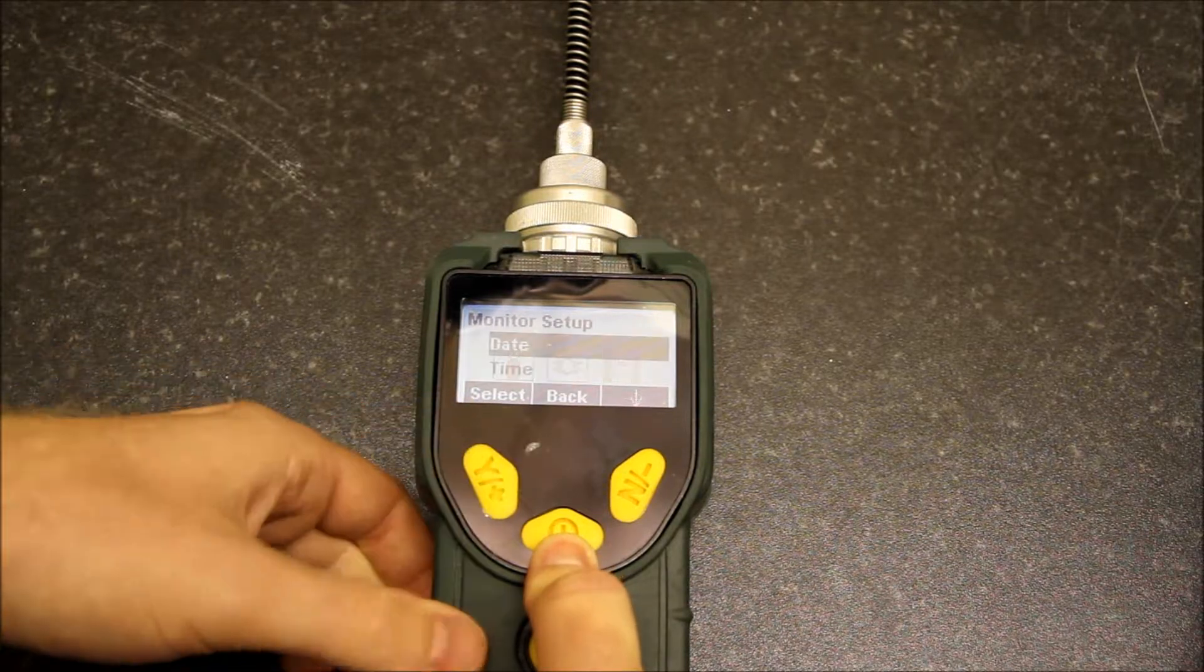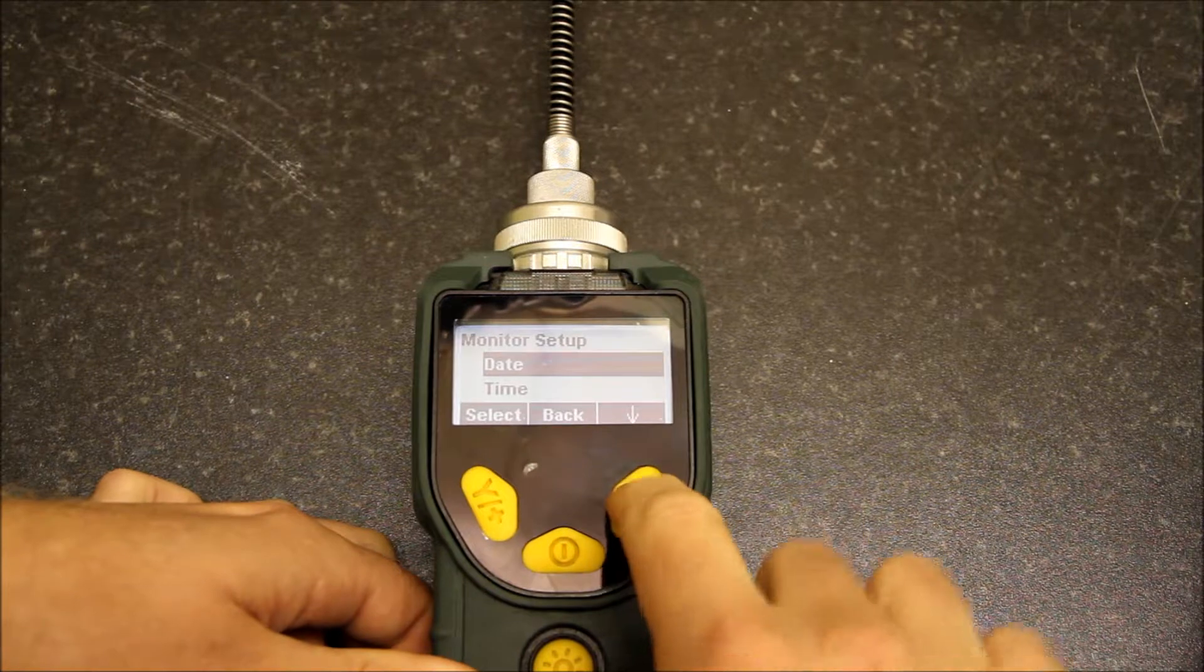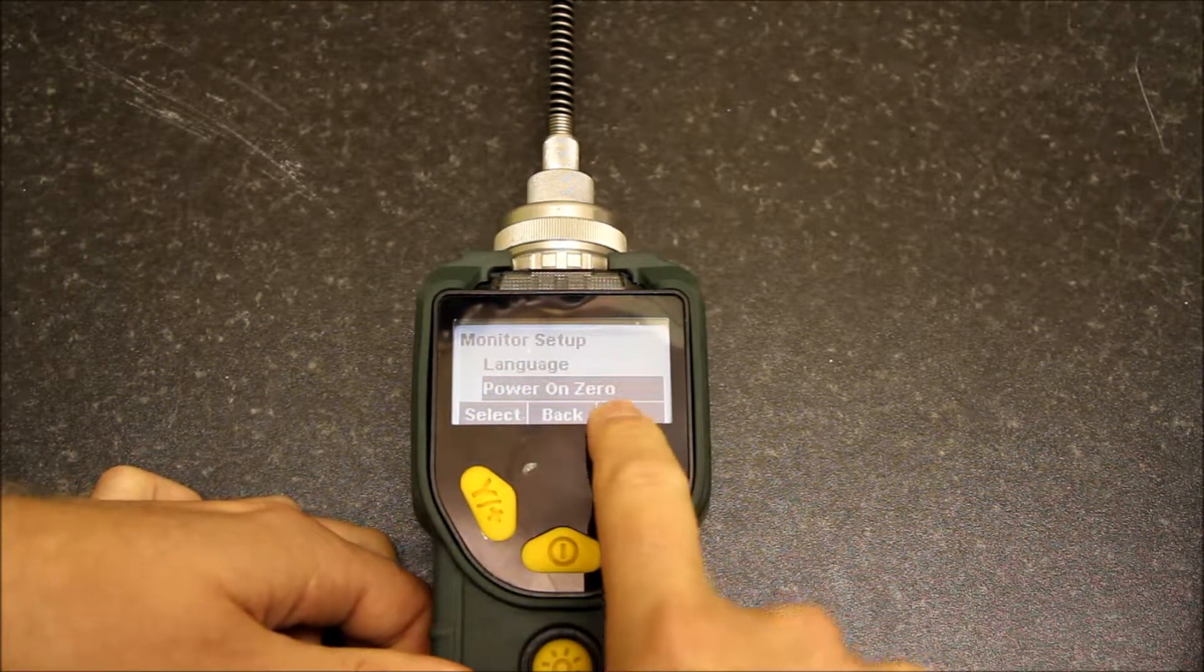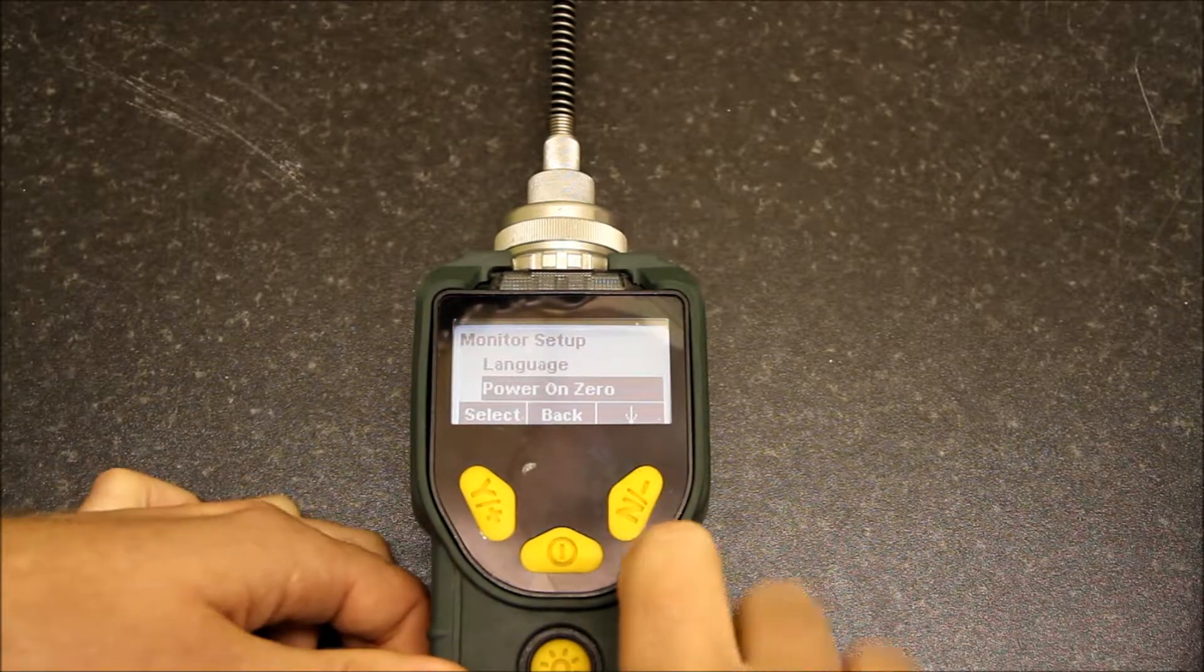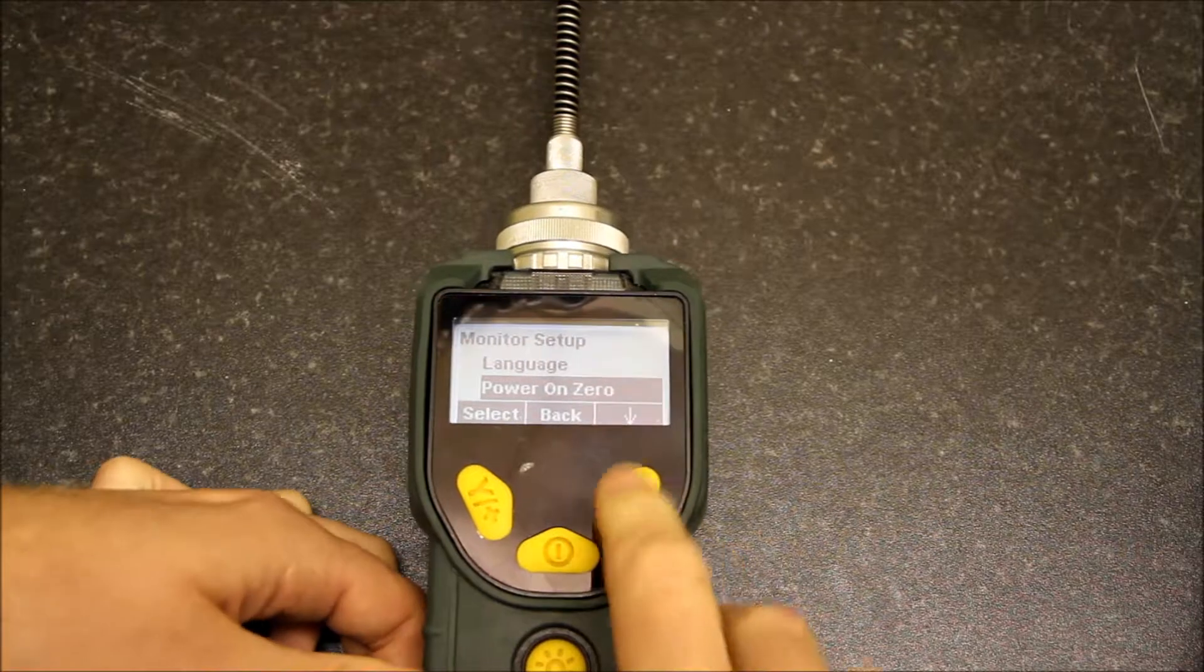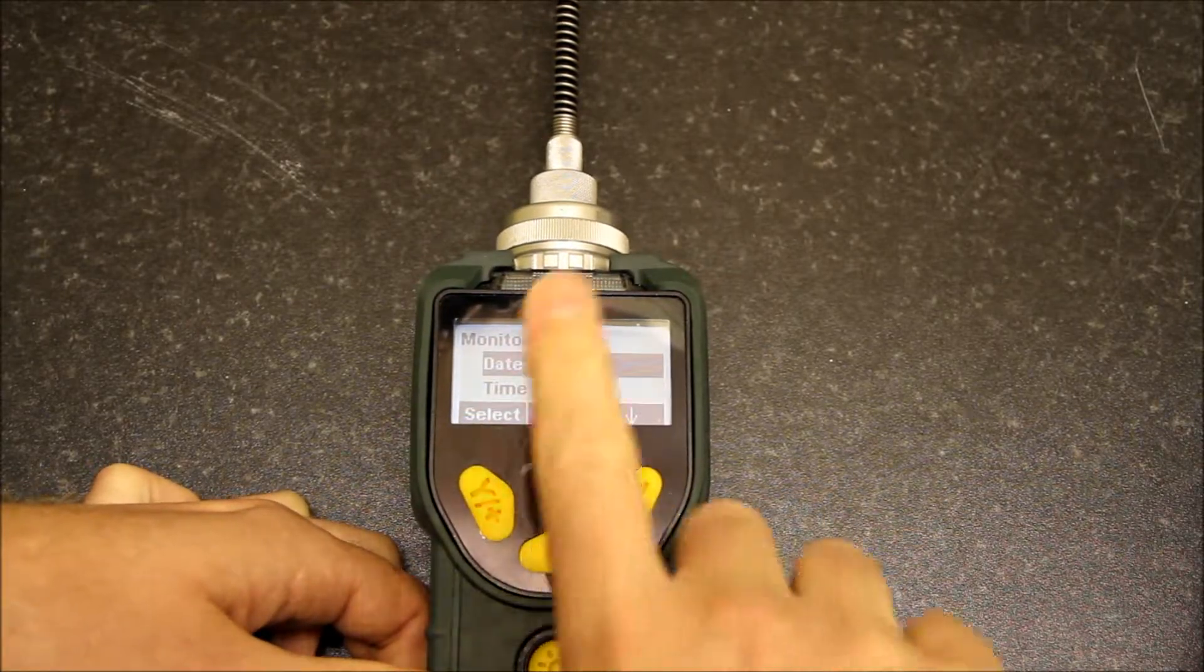Under monitor setup, in the Mini Ray Light we have date, time, language, power on zero. That means the unit will ask to be zeroed at the point that the power is turned on. I'd recommend not using this. Then LCD contrast, and that's it.